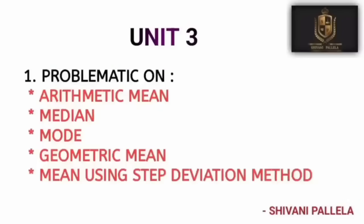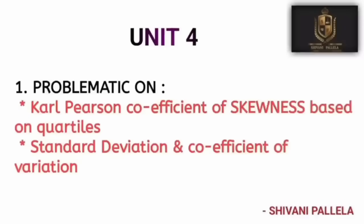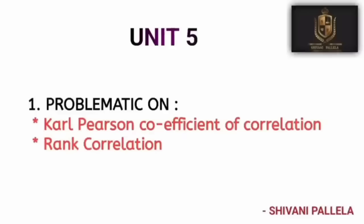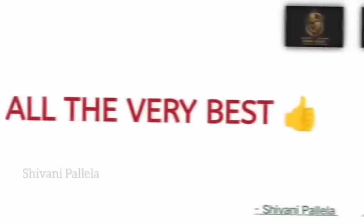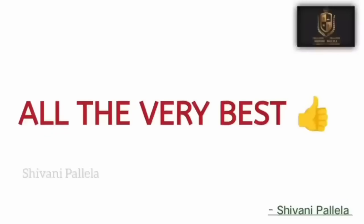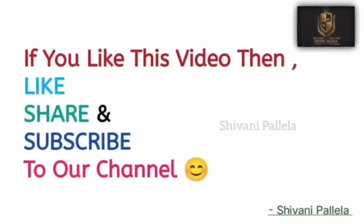From Unit 3, learn arithmetic mean, median, and mode — you can offer these as choices. From Unit 4, study Karl Pearson's coefficient of skewness and Bowley's skewness — these two topics are important. From Unit 5, compulsory topics are rank correlation and Karl Pearson correlation. Units 3, 4, and 5 are completely problematic.